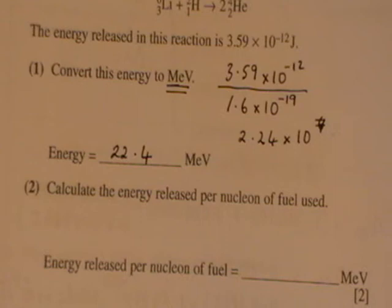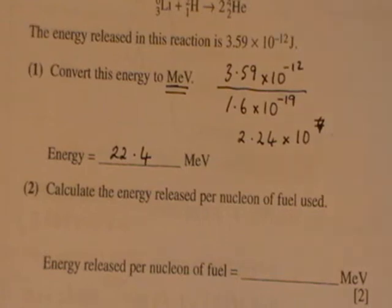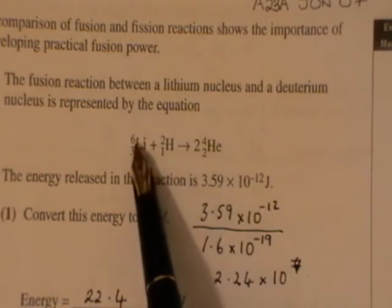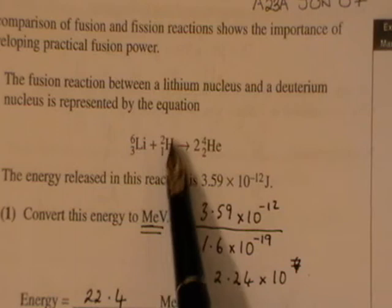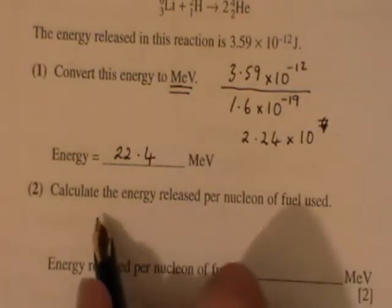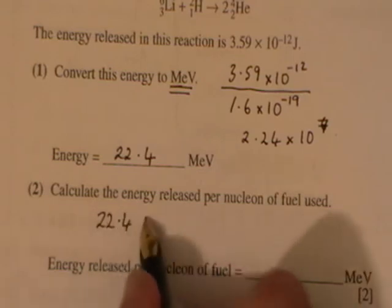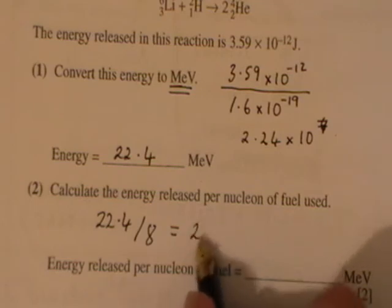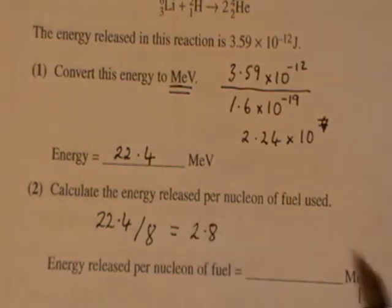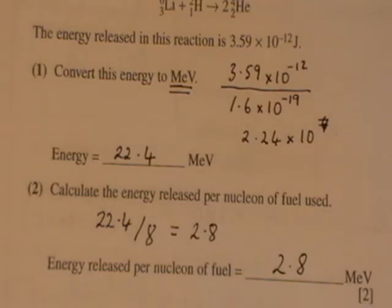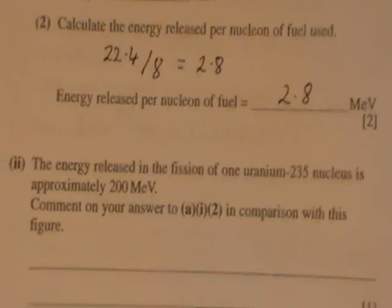We are then asked to calculate the energy released per nucleon of fuel, so the fuels used are lithium and hydrogen. The number of nucleons: there are 6 in lithium and 2 in hydrogen, so there are 8 nucleons altogether, so it's 22.4 divided by 8, which equals 2.8 mega electron volts per nucleon.